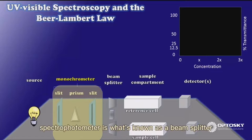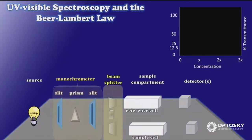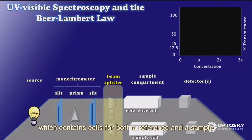The next element of our spectrophotometer is what's known as a beam splitter, which divides a beam of light into two equal parallel beams of light. Next is the sample compartment, which contains cells for both a reference and a sample.